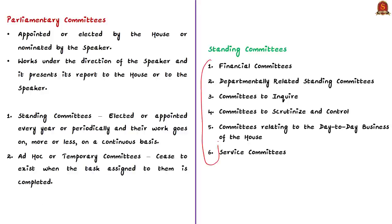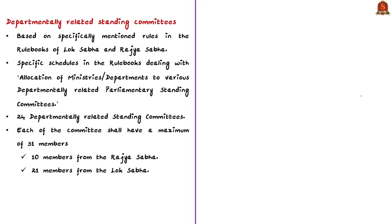Based on the nature of functions performed, standing committees are classified into six categories. This news article mentions three standing committees: the standing committee on home affairs, the standing committee on information technology, and the standing committee on labor. All three come under departmentally related standing committees, in short DRSCs. They are based on specifically mentioned rules in the rule books of Lok Sabha and Rajya Sabha. Specific schedules of the rule books deal with allocation of ministries or departments to various departmentally related parliamentary standing committees.